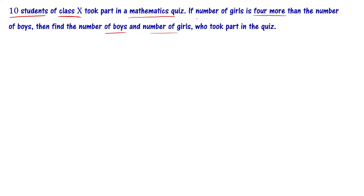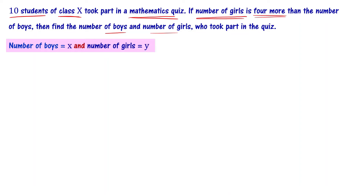The number of girls is 4 more than the number of boys. We have to find the number of boys and number of girls who took part in the quiz. Let me assume that the number of boys who attended the quiz is x and the number of girls who attended the quiz is y. The total number of students is 10, so x plus y equals 10.